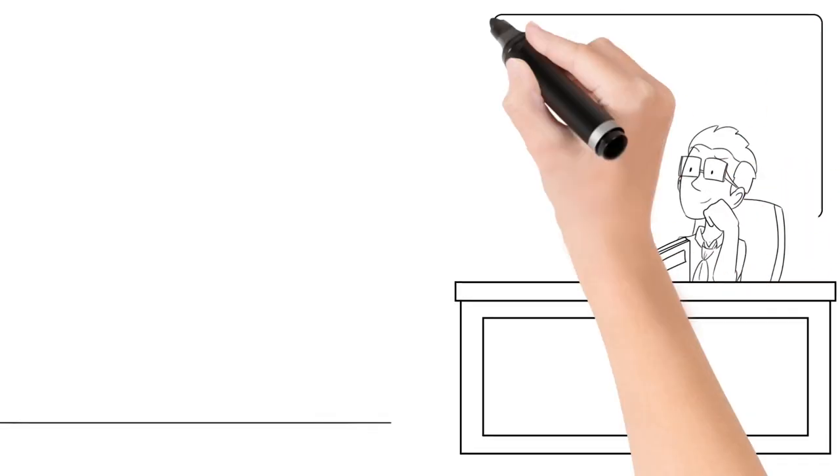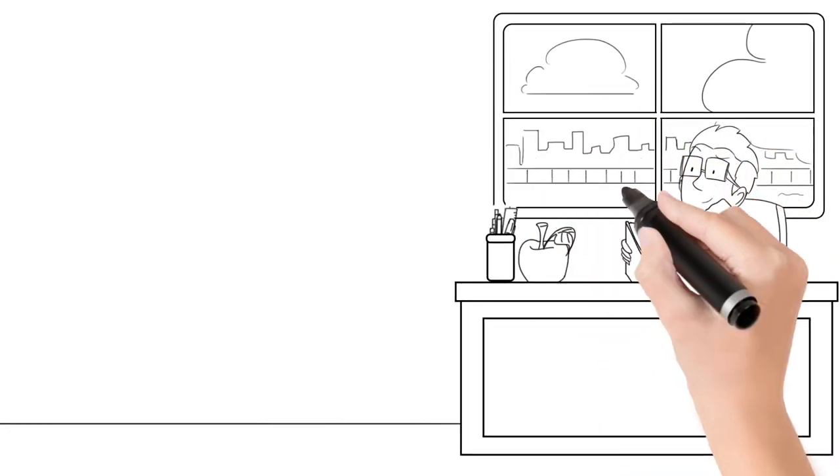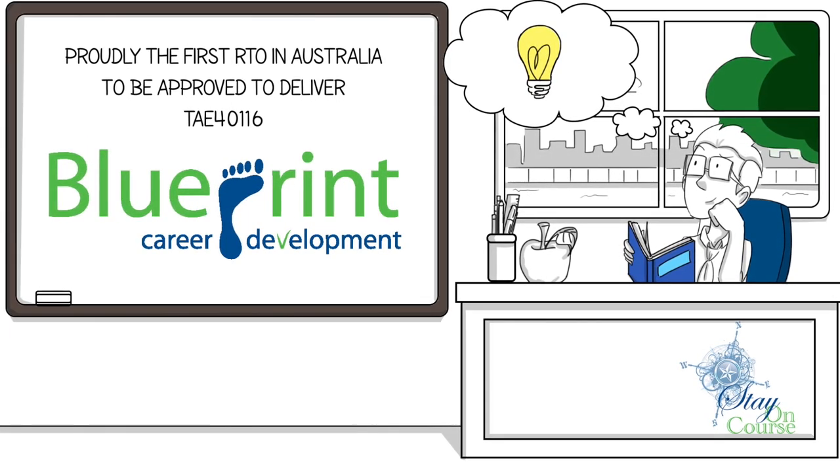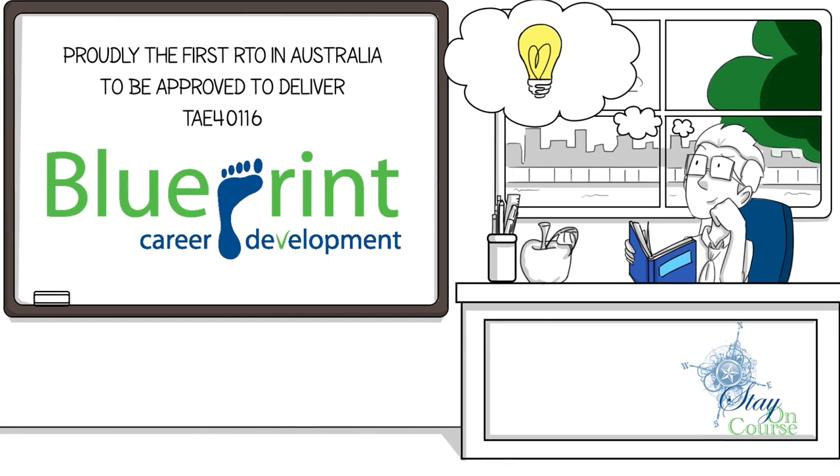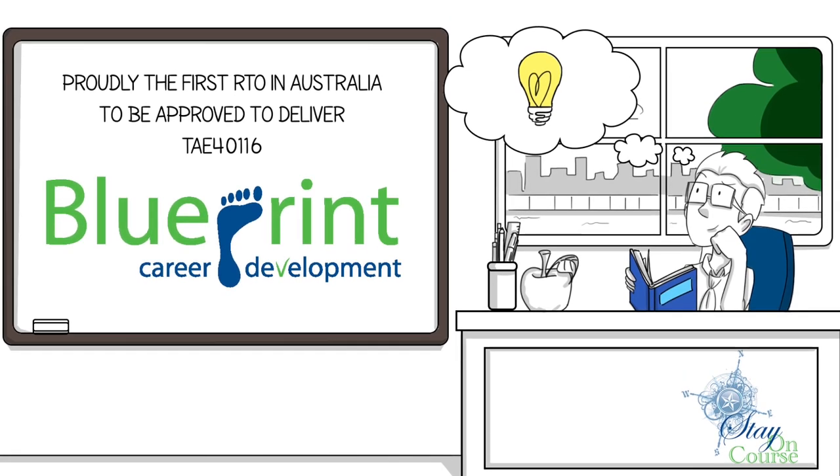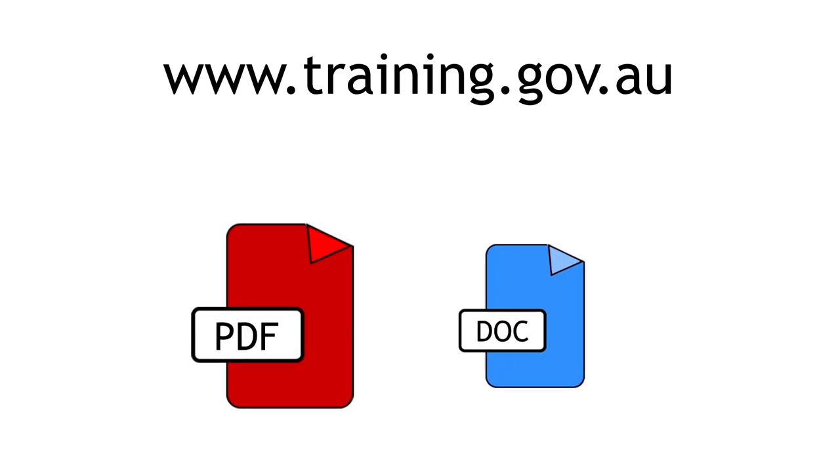Reading through all the information in a unit of competence, highlighting keywords and writing notes is the key to planning engaging and productive training and appropriate assessment. Units of competence can be downloaded at www.training.gov.au in PDF or Word format.